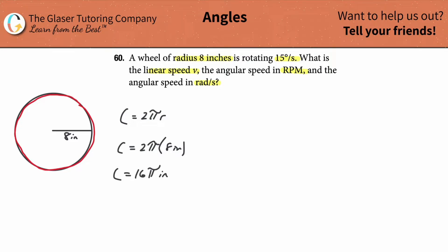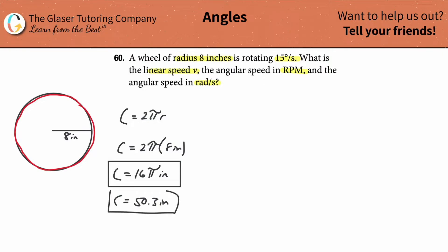This works out to an exact value of 16π inches. Since π is approximately 3.14, multiplying 16 by π gives us about 50.3 inches. So the circumference is about 50.3 inches. The first form is exact and the second is an estimate, since we can't write out the decimals to infinity.